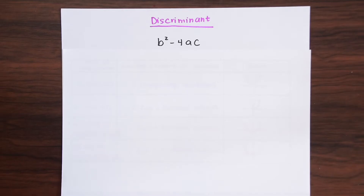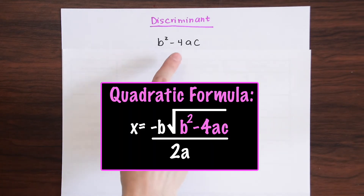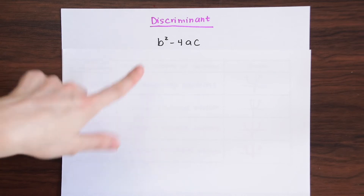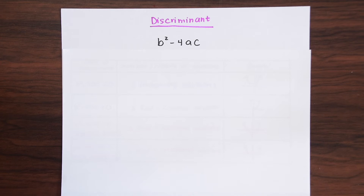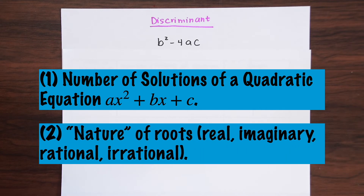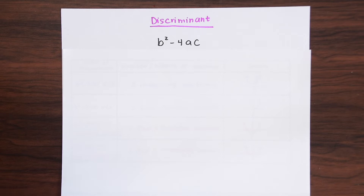So what is the discriminant? It is a formula — this might look familiar. It's part of the quadratic formula: b squared minus 4ac, the part under the radical. When we plug the coefficients of a quadratic equation in for a, b, and c, that value can tell us the number of solutions a quadratic equation has and the nature of the roots — meaning whether the solutions are rational, irrational, or imaginary.